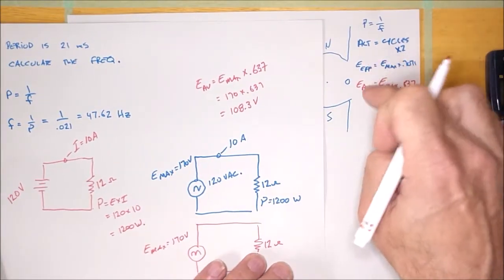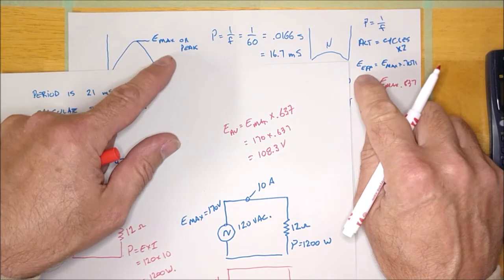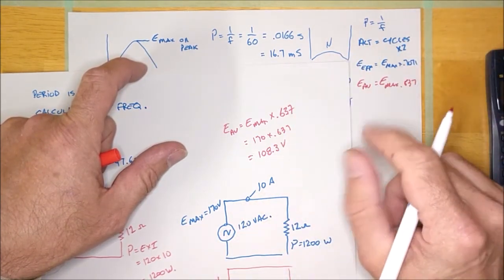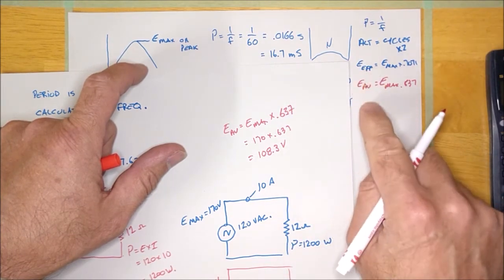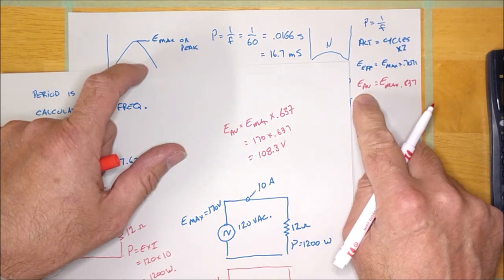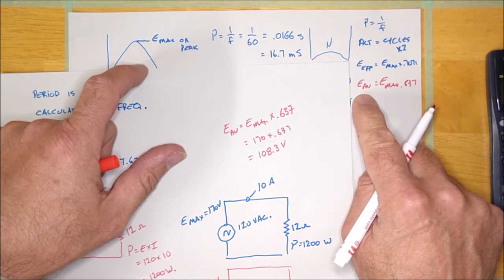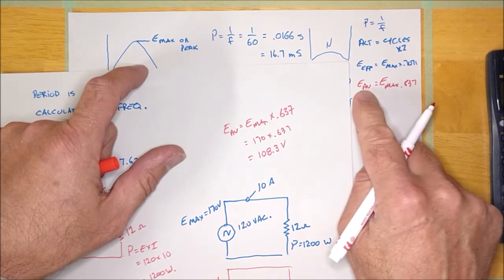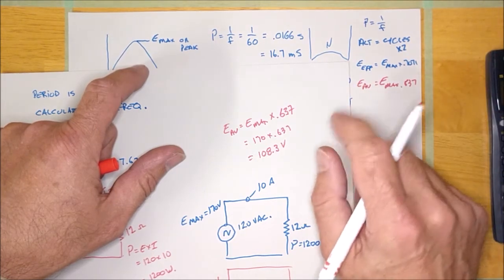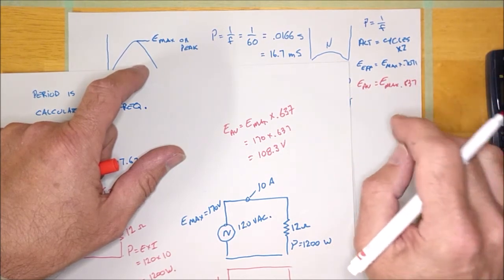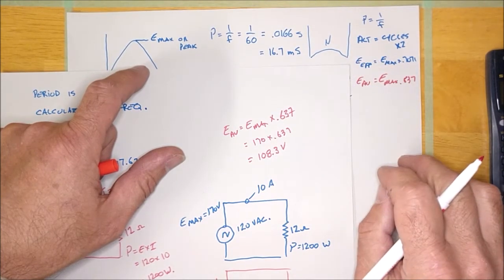So just to review these two formulas: peak and max are the same. Effective, RMS, and just straight up AC are all the same. If I say the effective voltage is 120, the RMS voltage is 120, or just the voltage is 120, we're talking about effective. Now, if I say the DC voltage is 108 or 200 or any other value, I'm talking about the average voltage. If you see average voltage, it means someone's done some rectification, because there's no such thing as the average AC voltage — it is the DC voltage. If you put your meter on DC, it measures average; if you put it on AC, it measures effective.